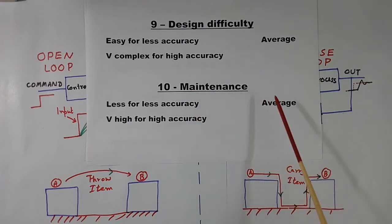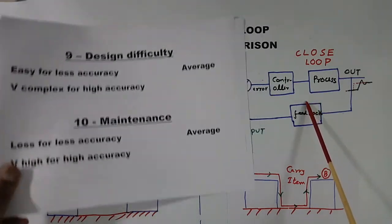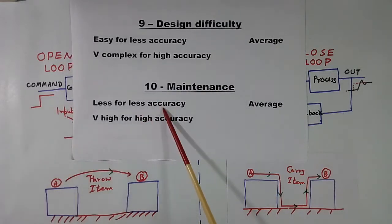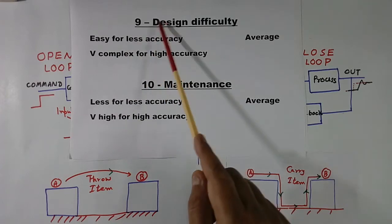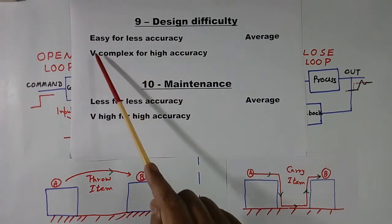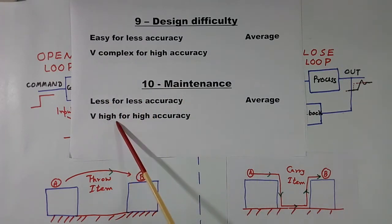Then maintenance. If we assume maintenance of closed loop is average, then for less accuracy, less maintenance is required because design is easy. For high accuracy, because systems are complex, very complex, so maintenance also will be high.